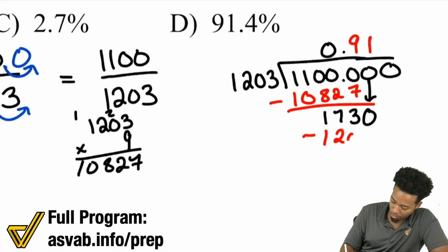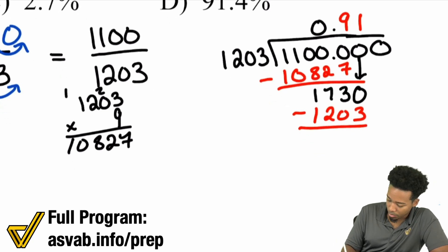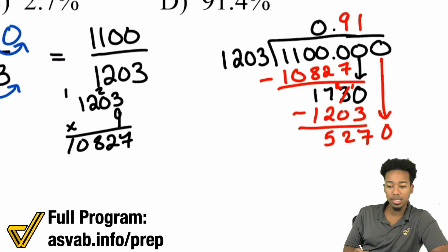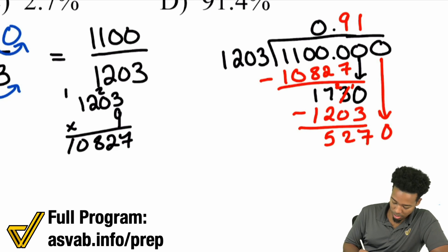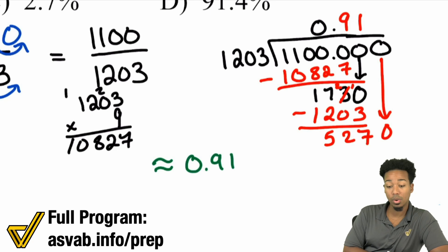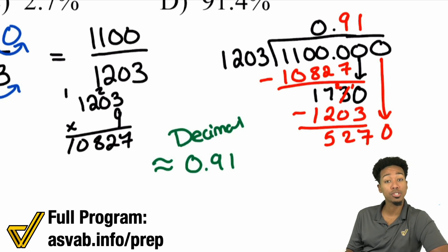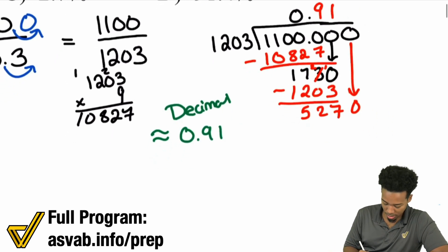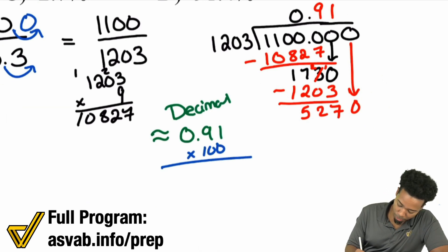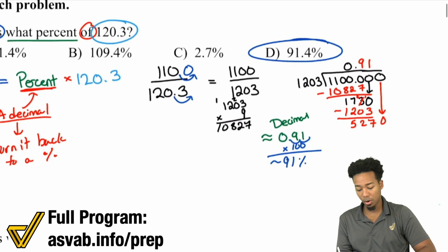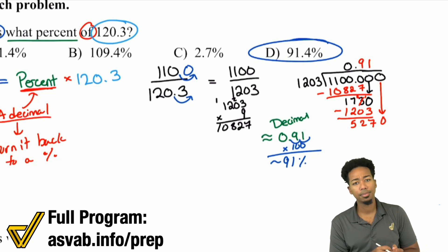We'll subtract the 1203. We're going to borrow right there for the 2, 10, 7, 2, 5 - that's 527. If we wanted to keep going and drop another zero, but this isn't actually going to be necessary. Your decimal is going to be approximately 0.91. Remember, that's a decimal. To turn that back into a percent, multiply by 100 - that just means move it to the right two times. So about 91%. When you look at your answer choices, D is about 91.4%. But the party doesn't stop here.